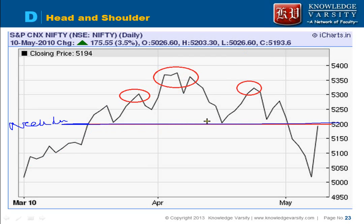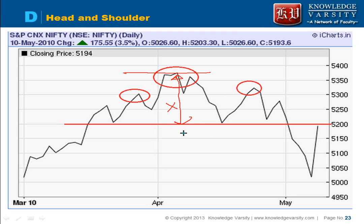Think about it: a person is there, this is his neck, and these are the shoulders. This is the head, these are the shoulders, and this is the neckline. This neckline acts like a support. The stock price will decrease, come to the neckline, again increase, again decrease. In a head and shoulder pattern, the distance between the head and neck — let us say this is X — the price will decrease by X amount.